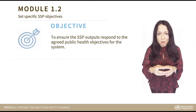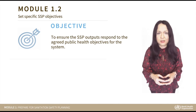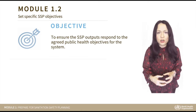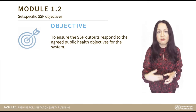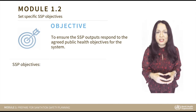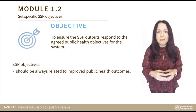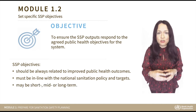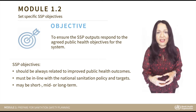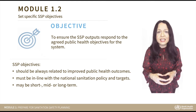The next step, Module 1.2, is setting specific objectives of the SSP process. This defines the actual purpose of the SSP process. The objective of 1.2 is to ensure that SSP outputs respond to the agreed public health objectives for the sanitation system. SSP objectives should always be related to improved public health outcomes and must be in line with national sanitation targets. They may be short-, mid-, or long-term based on context and available resources to allow incremental improvements and increasing equity in access to services.